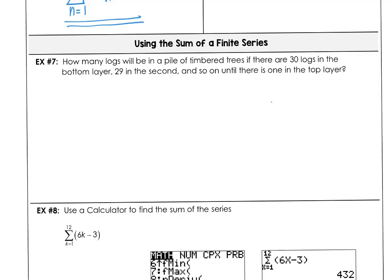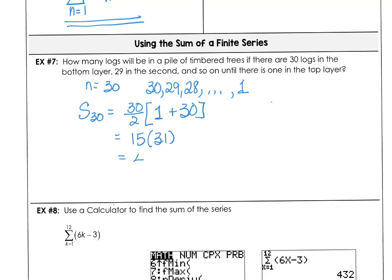Example 7 is a practical application. We want to know how many logs will be in a pile of timbered trees if there are 30 logs in the bottom layer. So n is 30, and 29 in the second, and so on until there's only one in the top layer. The sequence is 30, 29, 28, and so on until we get down to 1. How many logs would be the sum of every layer, all 30 layers? 30 divided by 2. The bottom layer is 1, the top layer is 30. 30 divided by 2 is 15. And 15 times 31 is 465 logs in our pile.